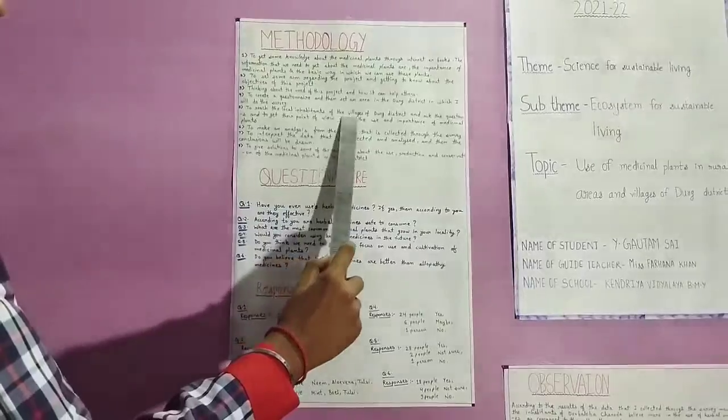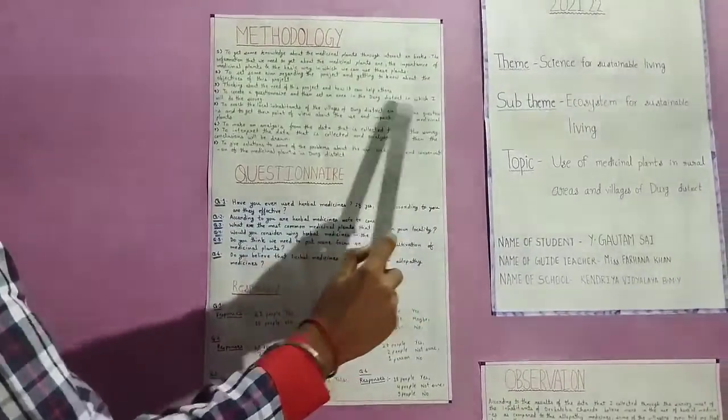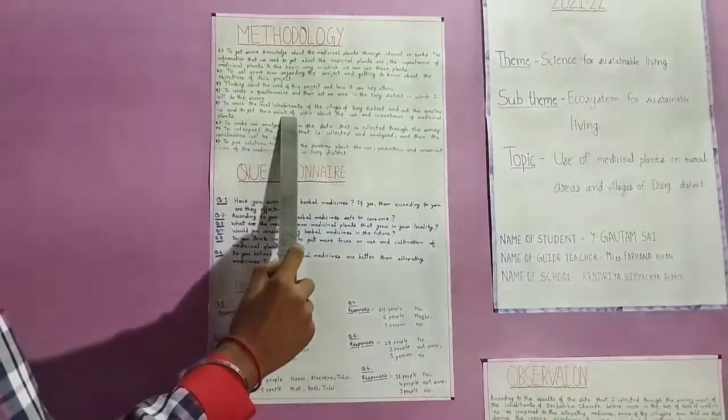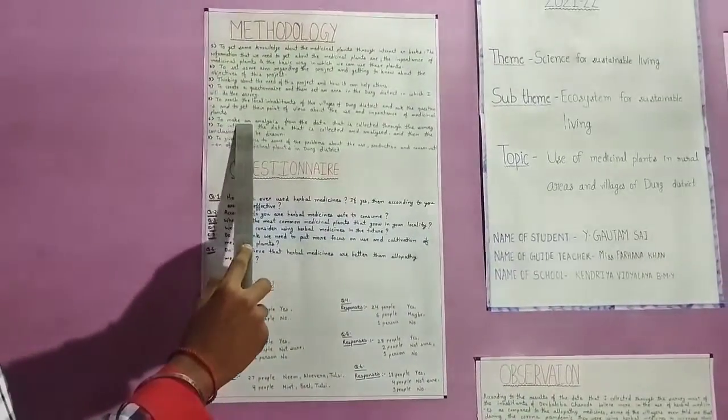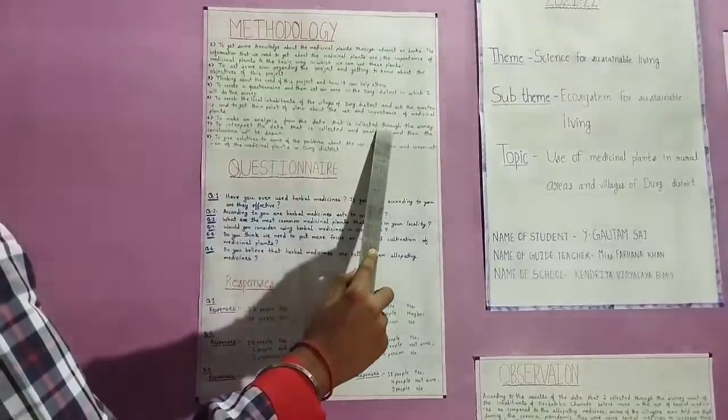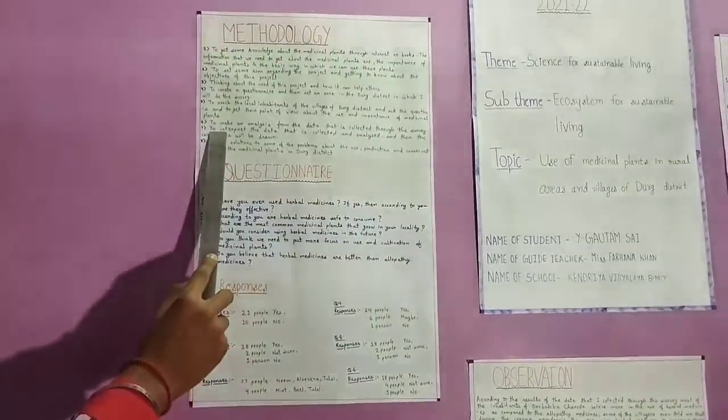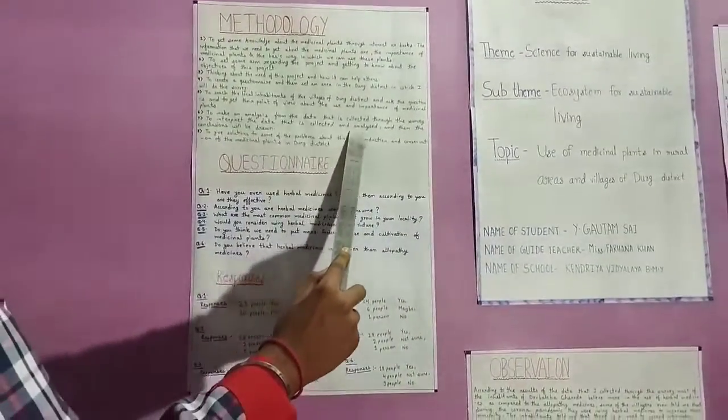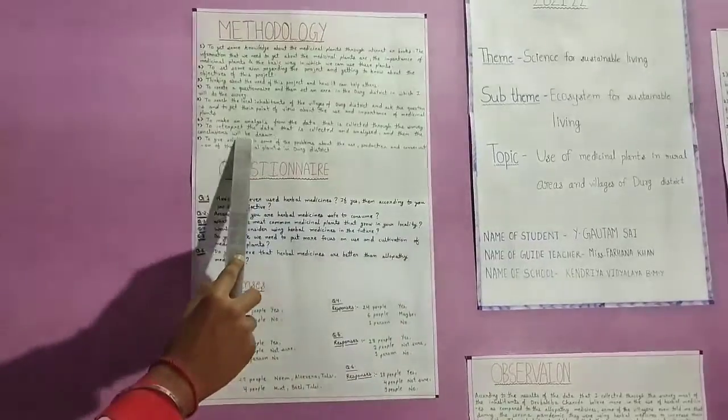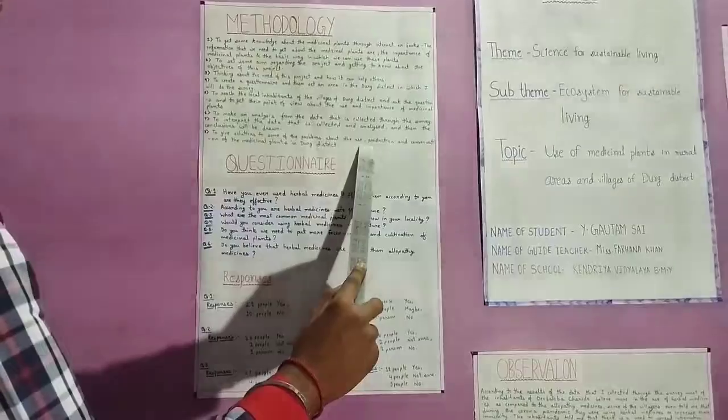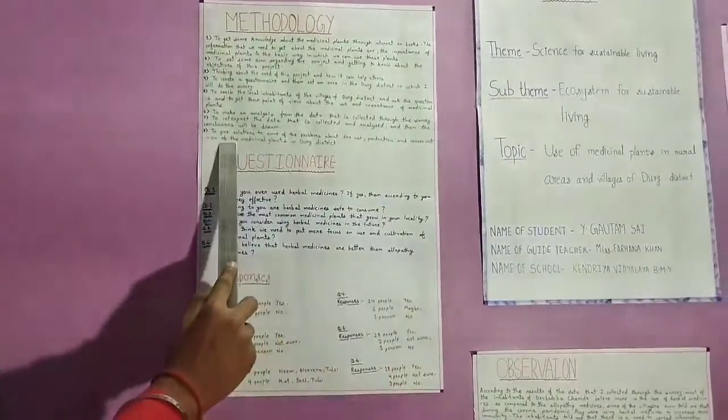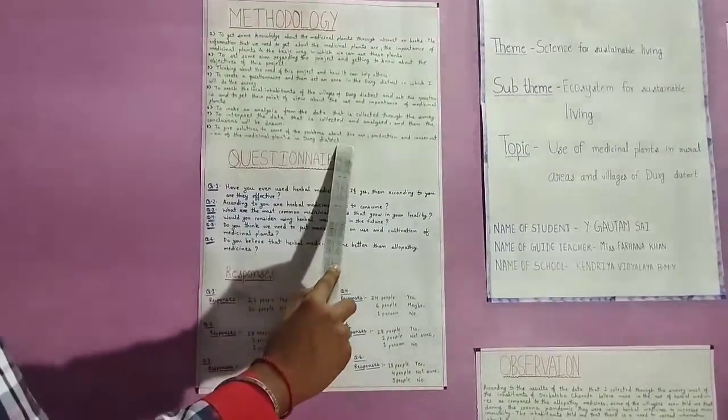Fifth, to reach the local inhabitants of the villages and ask the questions and to get their point of view about the use and importance of medicinal plants. Sixth, to make an analysis from the data collected through the survey. Seventh, to interpret the data and draw conclusions. Eighth, to give solutions to some of the problems about the use, production, and conservation of medicinal plants.